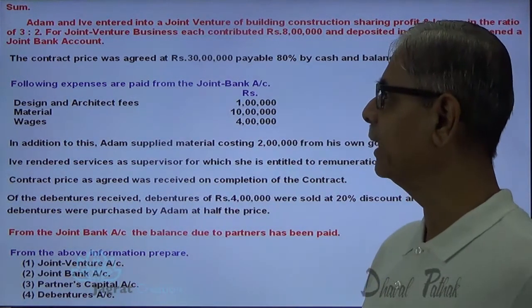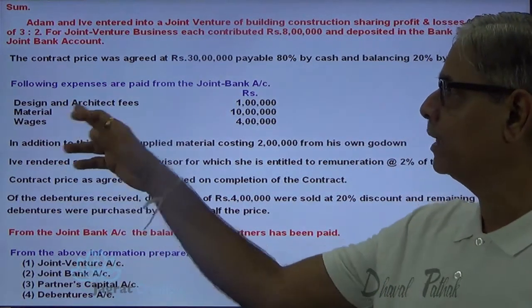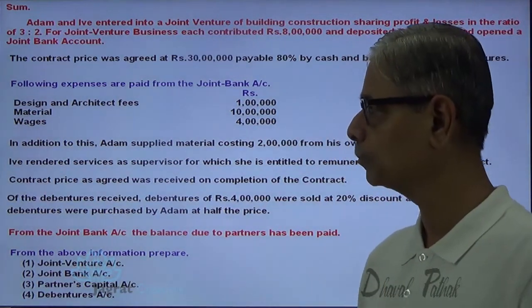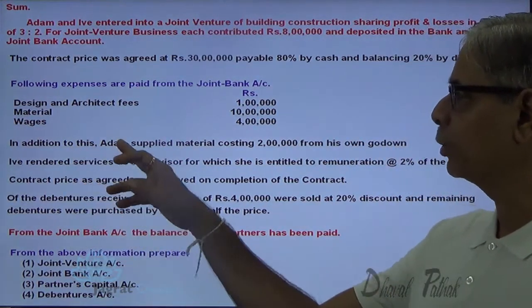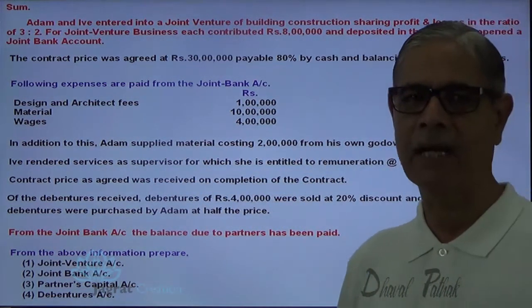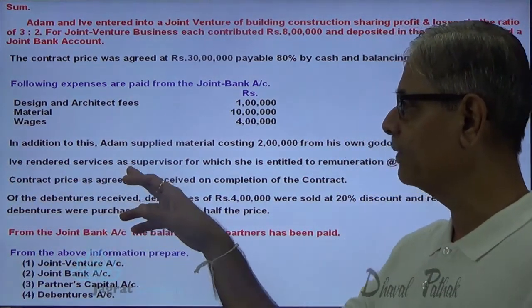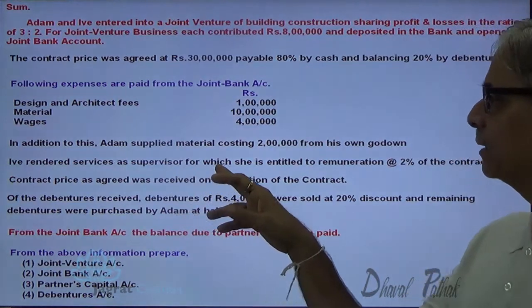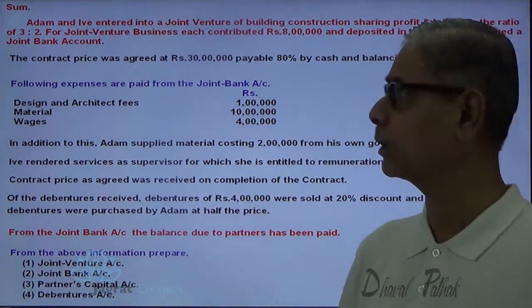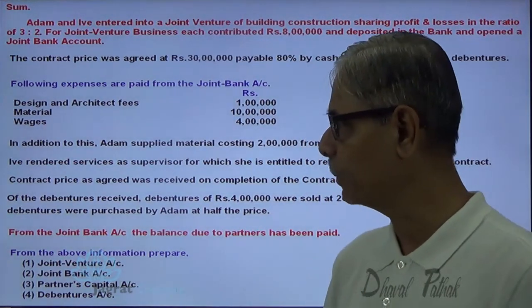Following expenses are paid from the joint bank account: design and architect fees, material, and wages. In addition to this, Adam supplied materials costing 2 lakhs from his own stock — goods supplied by Adam for the purpose of construction. Eve rendered services as supervisor, for which she is entitled to a remuneration of 2% of contract price. Contract price is 30 lakhs, and 2% thereof is to be given as remuneration for supervision.